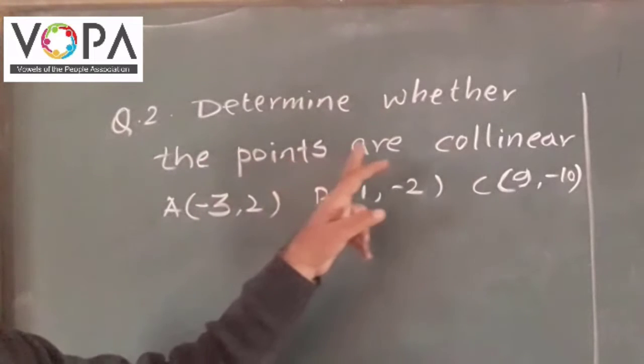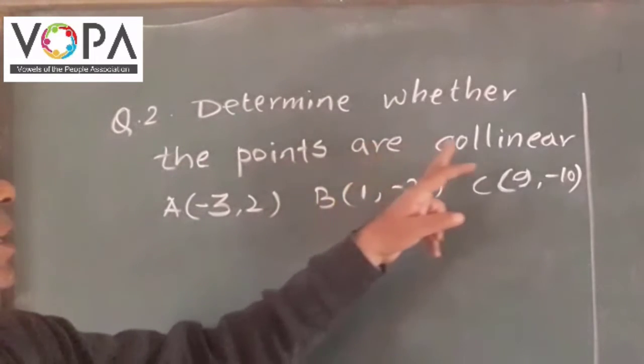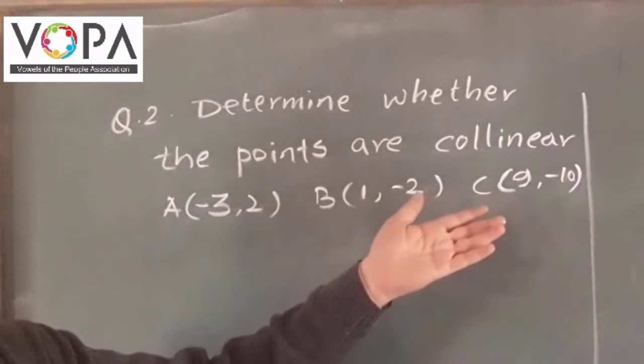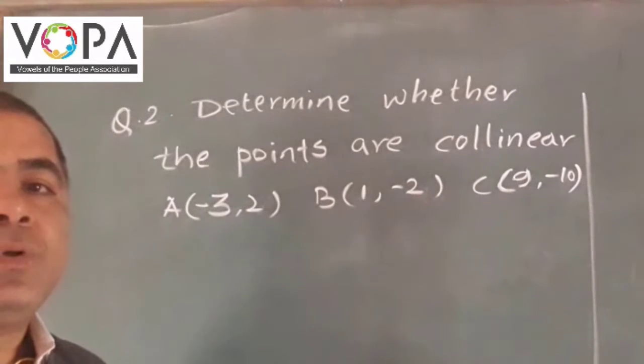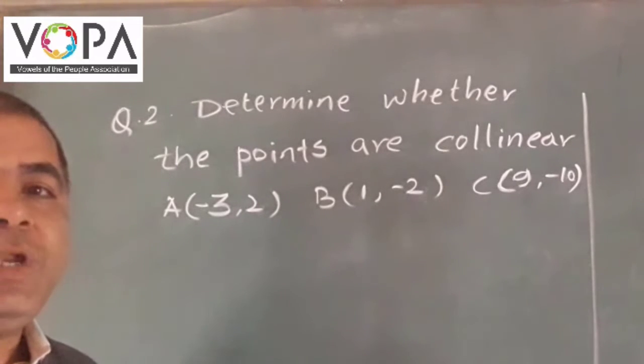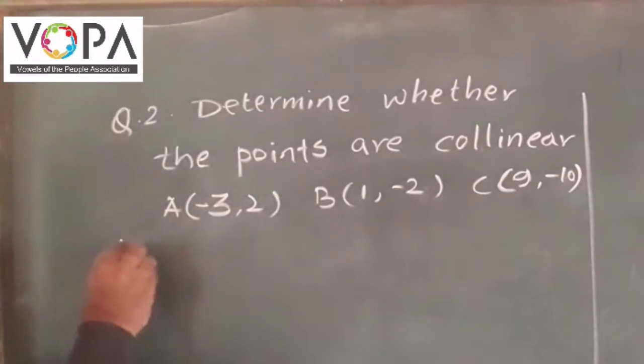The points given are collinear A, B, and C. Now to find whether these points are collinear or non-collinear, we have to find the distances among these points. Let us find the distance between A and B.